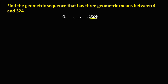In the sequence, the first term is a sub 1 and the last term is a sub n, then a sub 2 for the second term, a sub 3 for the third term, and a sub 4 for the fourth term. Since this problem is a geometric sequence, the formula is: a sub n equals a sub 1 times r to the power n minus 1.